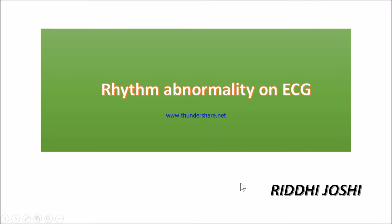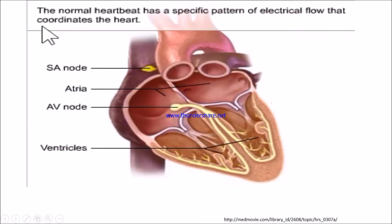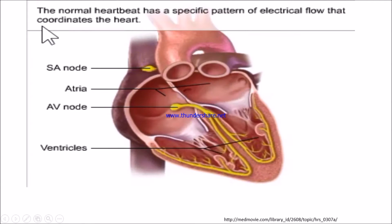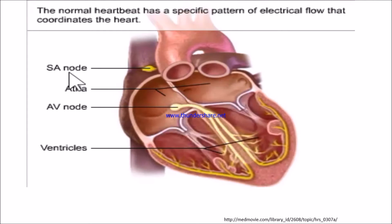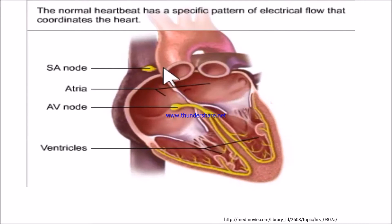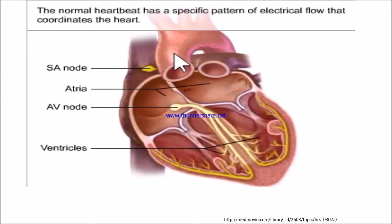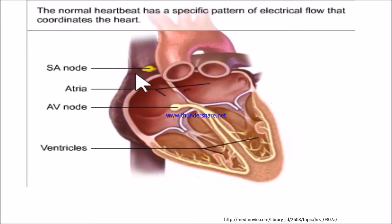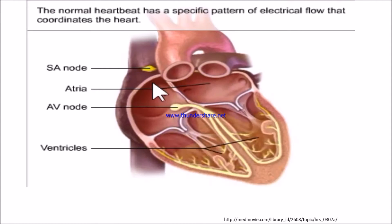Hi, this is Reali Joshi and I'm going to explain the rhythm abnormality on ECG. Let's see about the normal conduction system of our heart. Our impulses will generate from the sinoatrial node — it is the primary pacemaker of our heart. This is a specialized cell called the pacemaker cell, and impulses will arise from here.